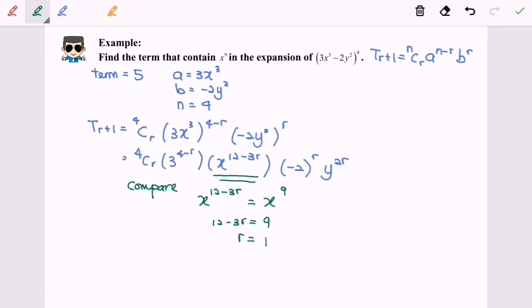Now we already know the value of r. So by substituting the value, T₂ will be equal to ⁴C₁, and then 3³ because 4 - 1, and then x⁹, and then (-2)¹, and then y².